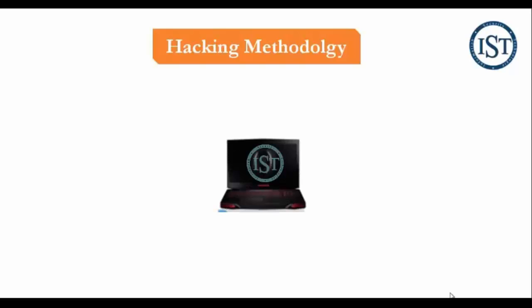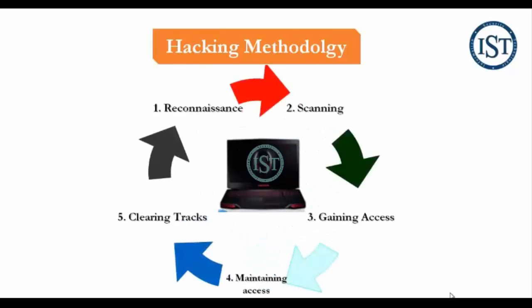The hacking methodology has five steps: reconnaissance, scanning, gaining access, maintaining access, and finally clearing tracks. Reconnaissance is the first step in which we try to gather all possible information about the target we are going to attack. Reconnaissance is a passive information-gathering technique because the attacker does not directly touch or scan the target — they gather information from publicly available resources like the internet.